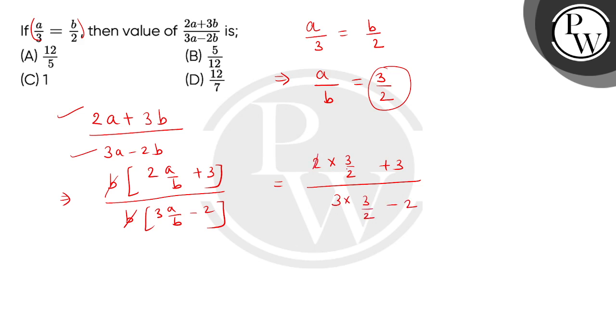So, here 2 to cancel, so we'll get in numerator 6, and denominator 9 by 2 minus 2. So, this becomes 6 divided by 9 minus 4 divided by 2, which means 5 divided by 2.